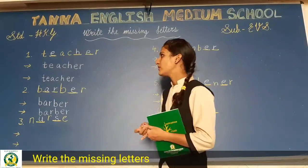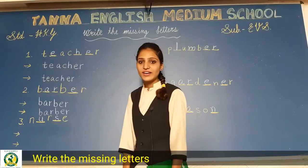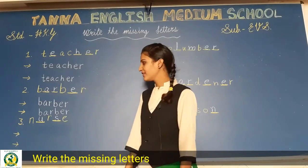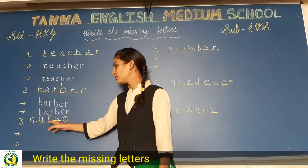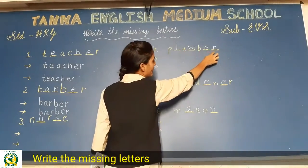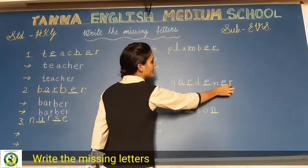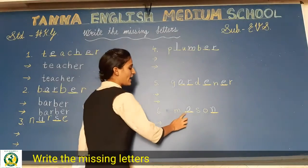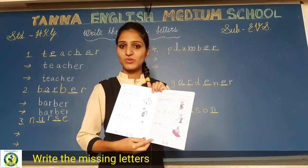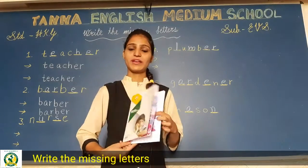Let's revise। First: teacher — T-E-A-C-H-E-R। Barber — B-A-R-B-E-R। Nurse — N-U-R-S-E। Plumber — P-L-U-M-B-E-R। Gardener — G-A-R-D-E-N-E-R। Then last, mason — M-A-S-O-N। आपको यह दोनों pages complete करने हैं, spelling को बार-बार read करना है, और अपने CW and HW दोनों notebooks में complete करना है।